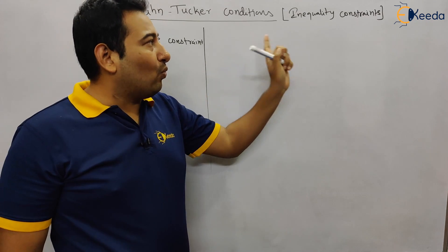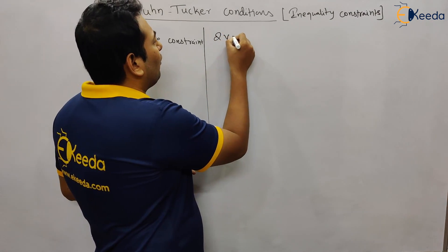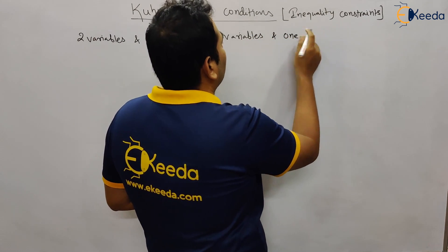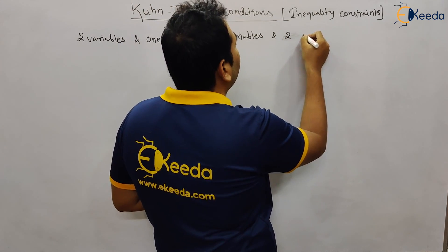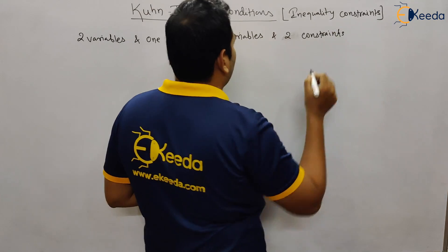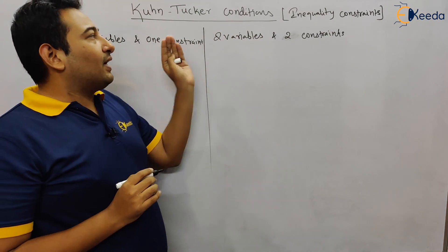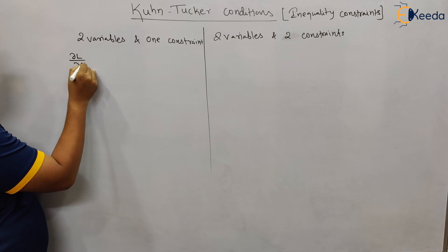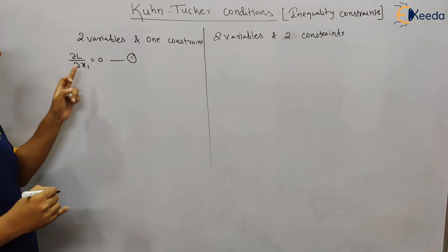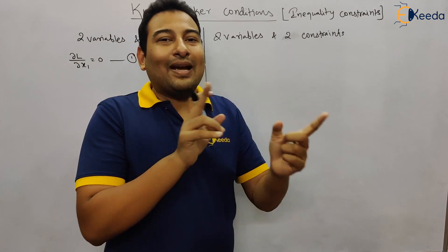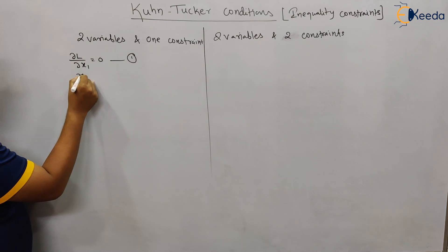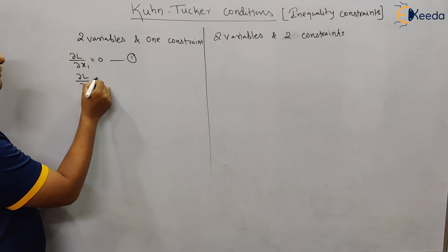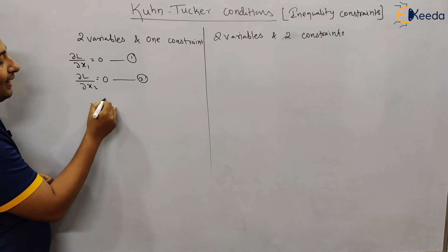The two cases are: two variables with one inequality constraint, and two variables with two inequality constraints. Now the conditions for the first case: condition one is ∂L/∂x1 = 0, where L is your objective function minus lambda times the constraint. Condition two is ∂L/∂x2 = 0, since there are two variables.